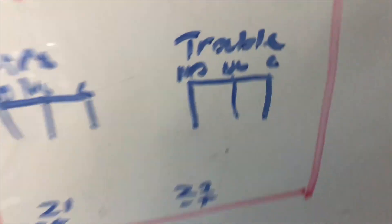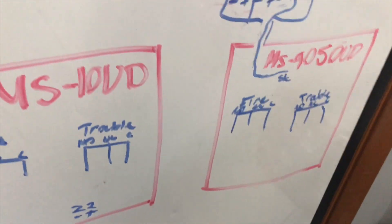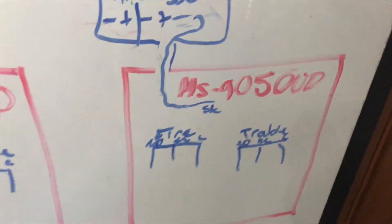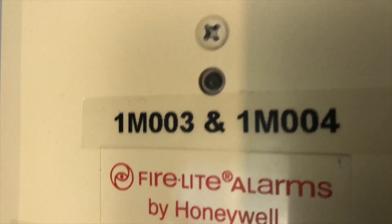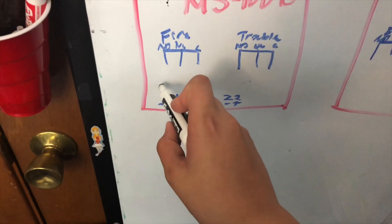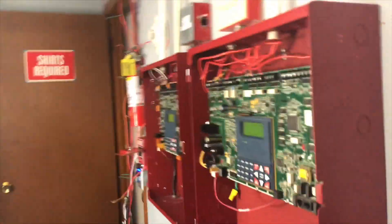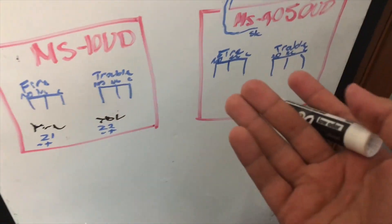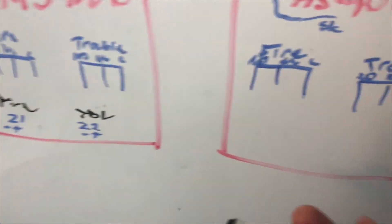I'm going to go over here to my diagram. The MS-10UD has fire and trouble relays, and zone 1 and zone 2 are what I'll be using for the demonstration. The 9050UD is addressable, so we have an SLC in addition to zones. There's a dual monitor module, so you can see it double-polling for each two addresses — two zones basically. We also have fire and trouble relays here. One zone will be set to a fire type and the other to a trouble — specifically supervisory — so they won't activate one another during the demonstration.